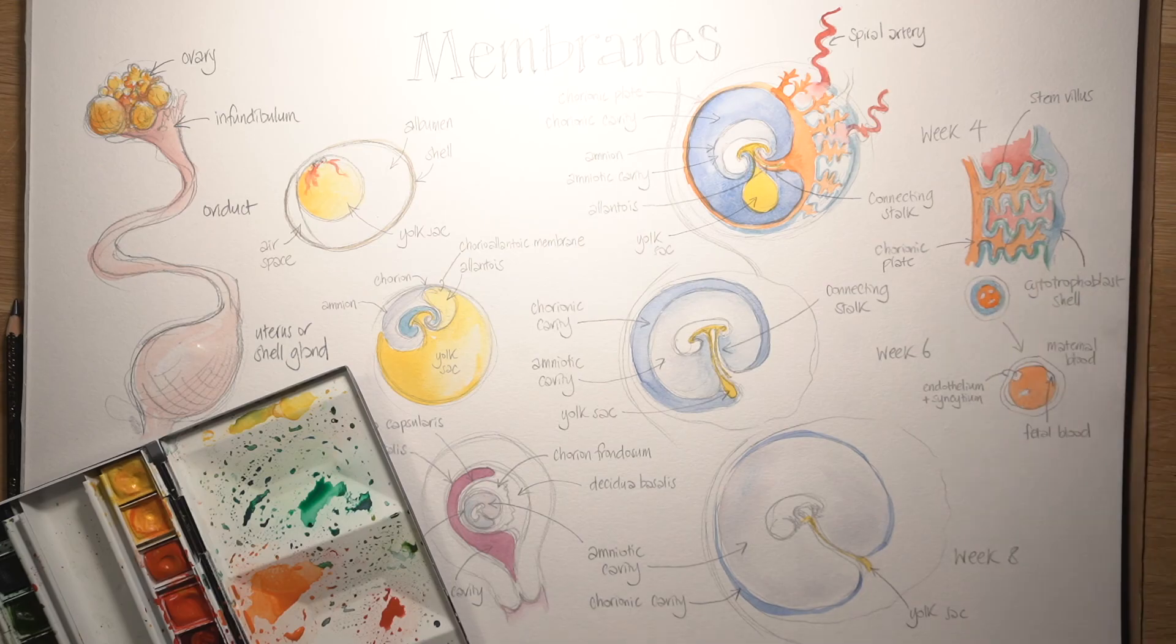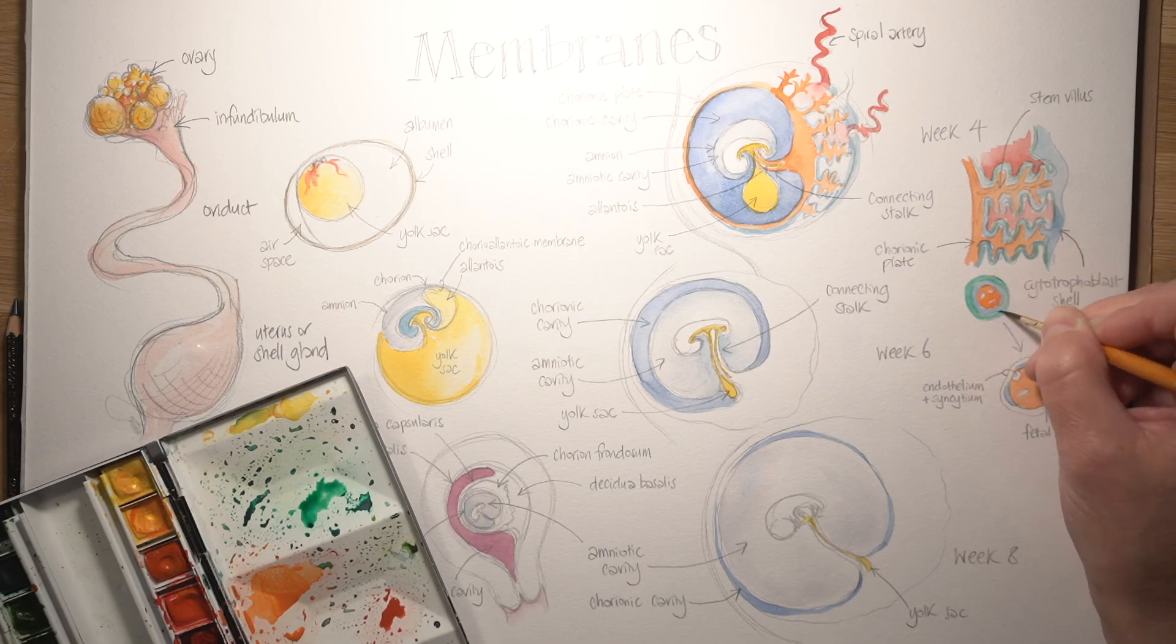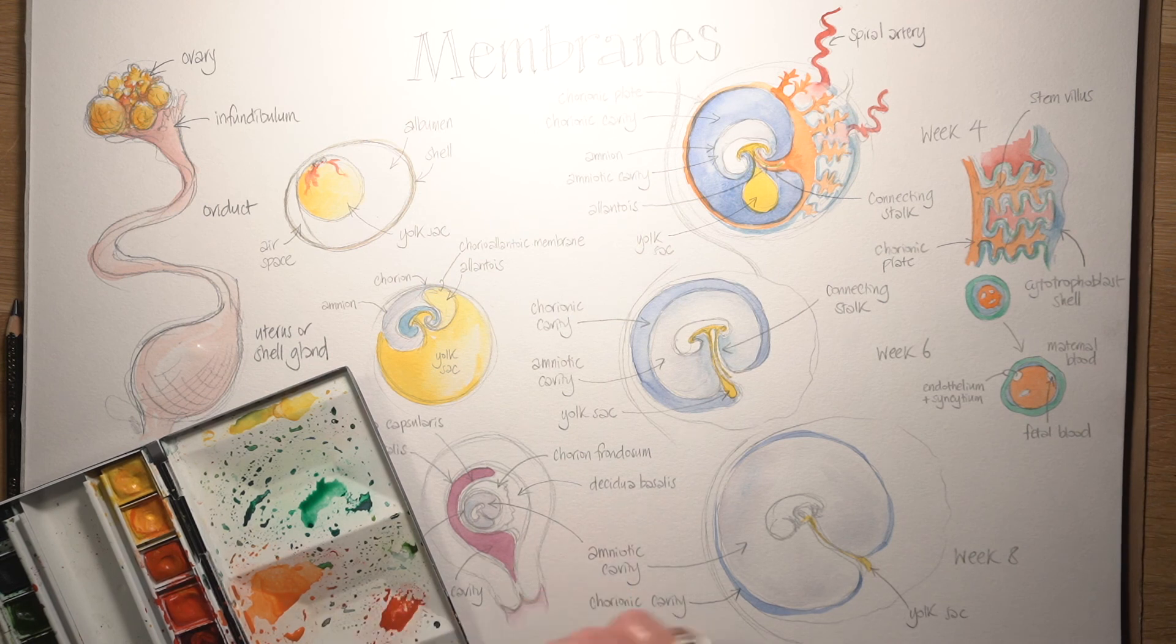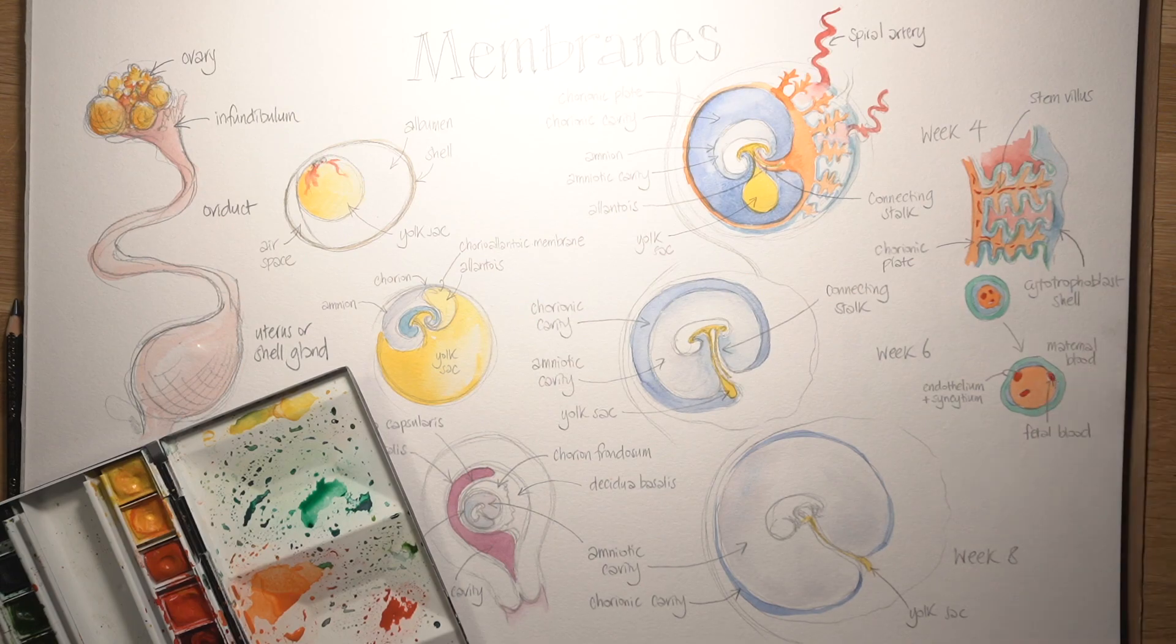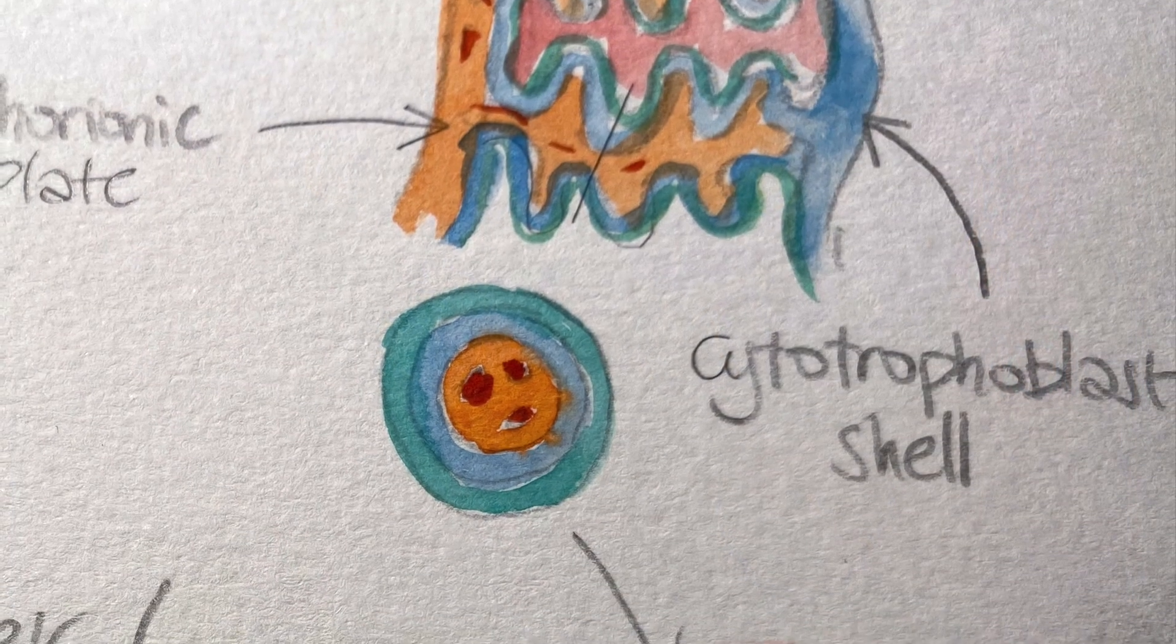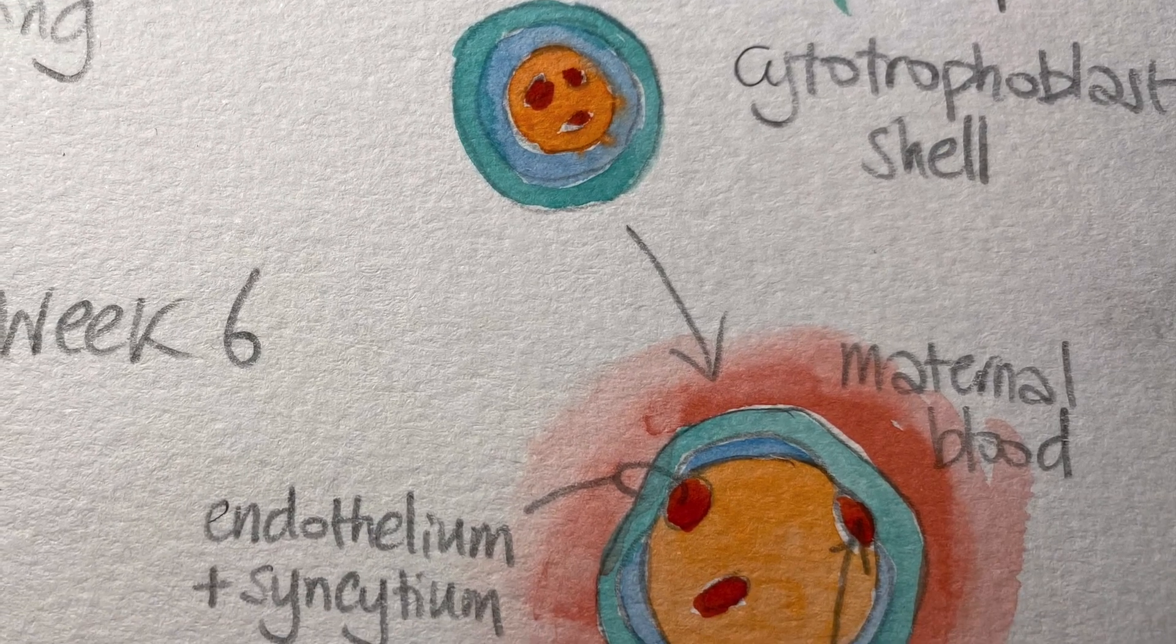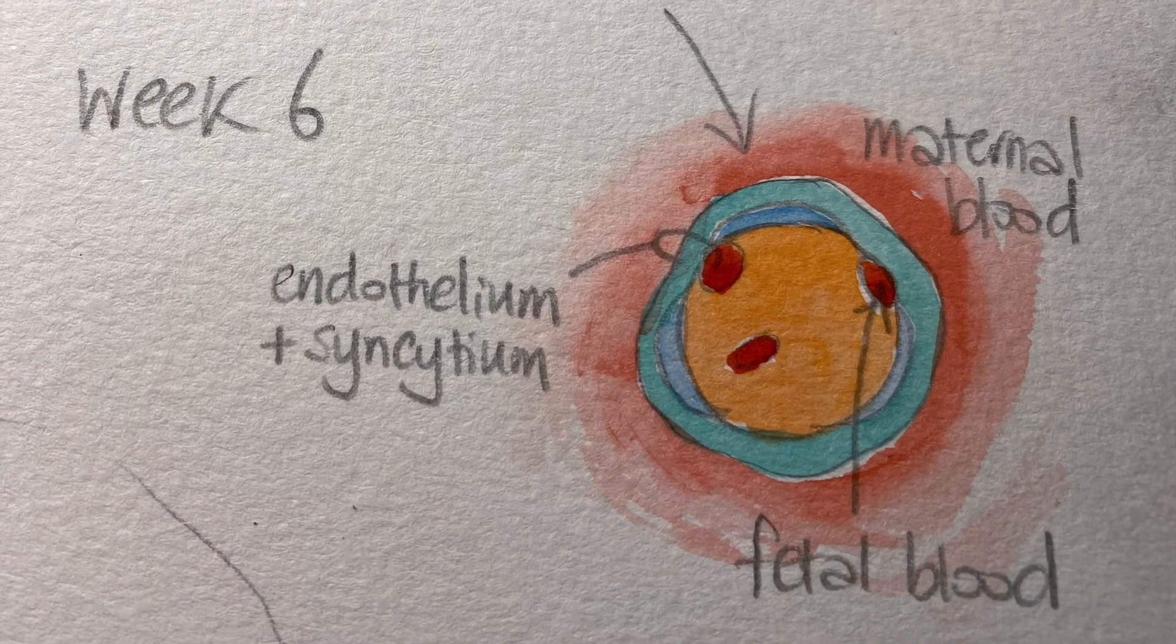Those capillaries eventually resolve into the umbilical vein, carrying that nicely oxygenated blood into the embryo, the fetal body. Then we have two umbilical arteries bringing the blood back out to the placenta, eventually into those capillaries in the villi. The villi start off with layers on the outside, the cytotrophoblast and the syncytiotrophoblast and the cytotrophoblast thins down. So that eventually the barrier between the maternal blood and the blood inside the capillaries is just a very thin placental barrier, the lining of the capillary, the endothelium of the capillary and that syncytium by the fourth month in utero.